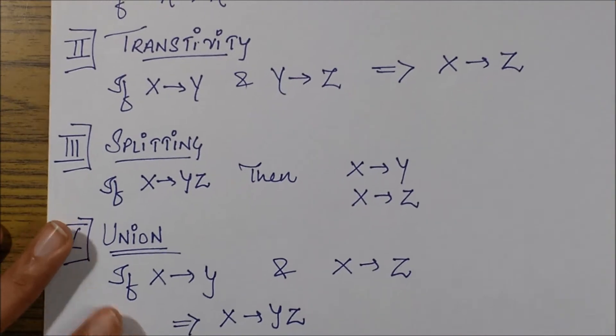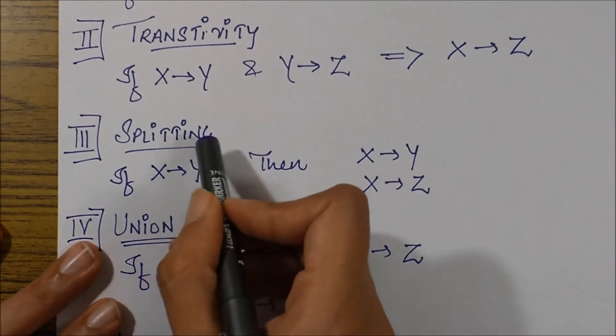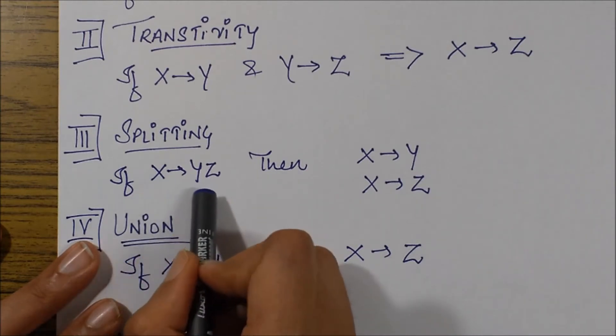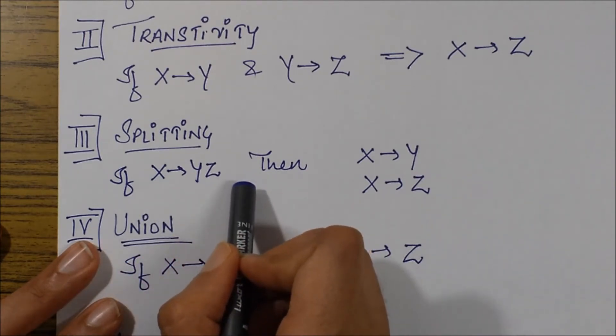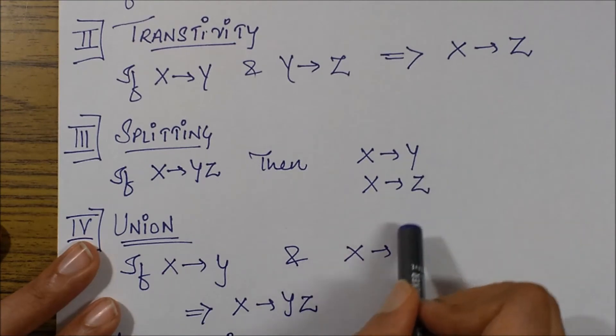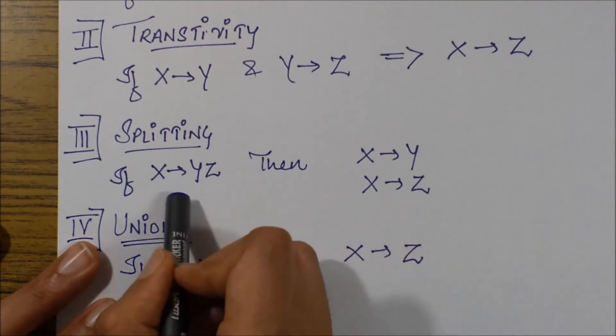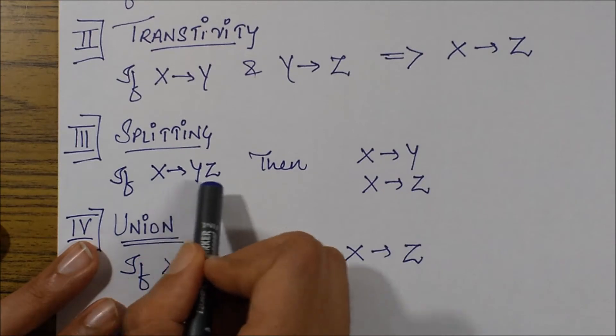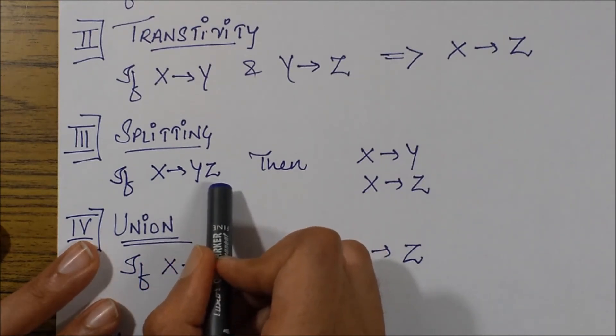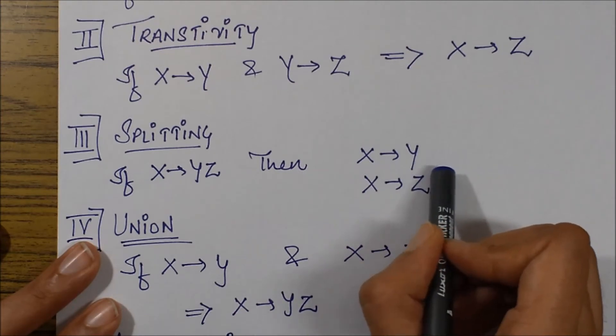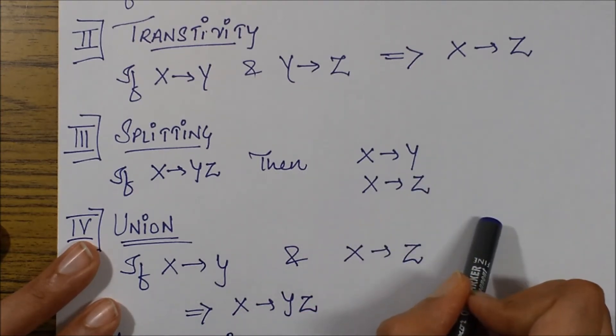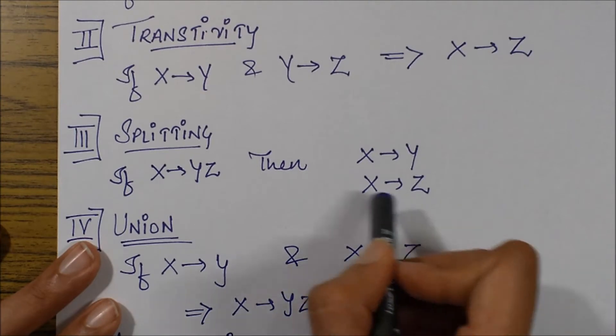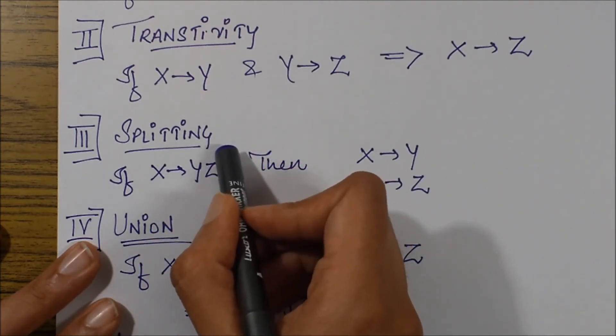Then we move on to splitting. What is splitting? Splitting says that if we are given X goes to YZ, then that means X goes to Y and X goes to Z also holds. That means if X determines Y and Z completely, then we can also say that X determines Y and X determines Z. Now this splitting on the right hand side cannot be taken as splitting on the left hand side.